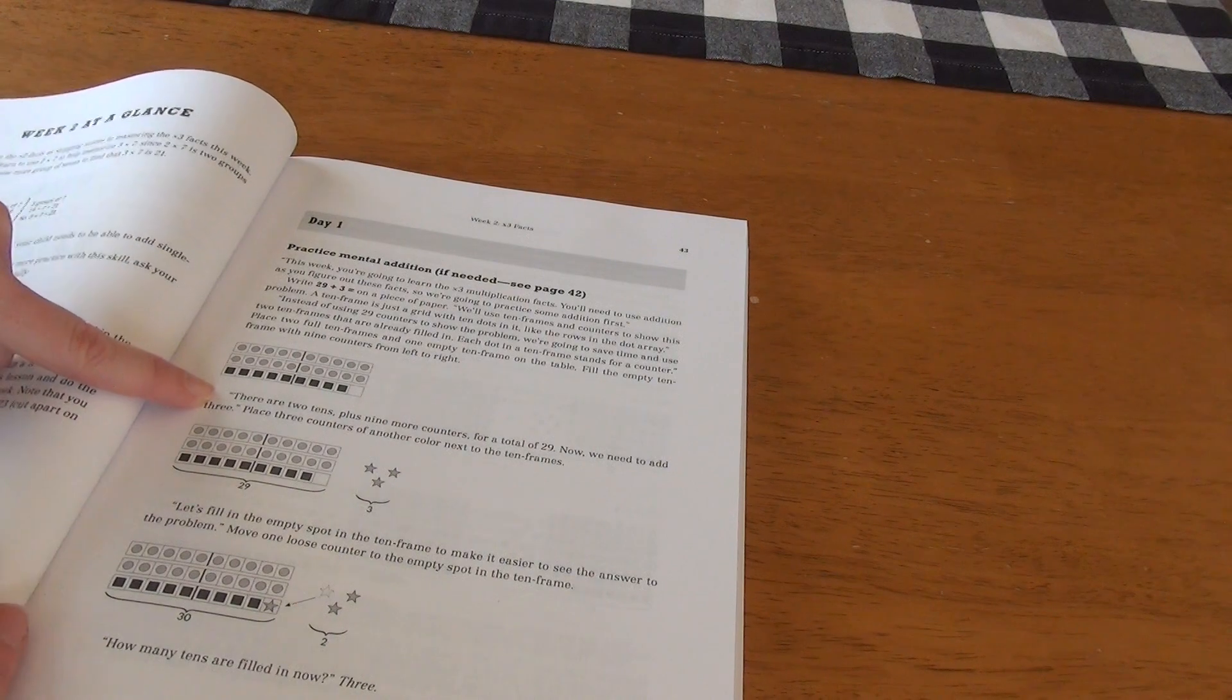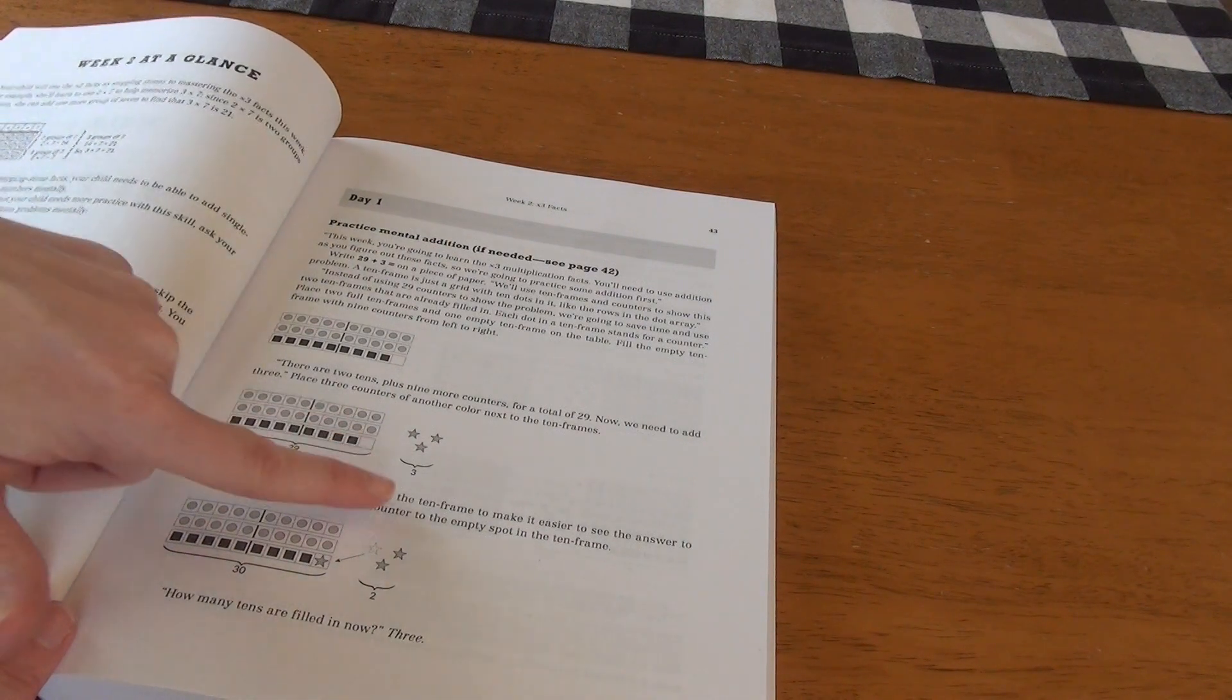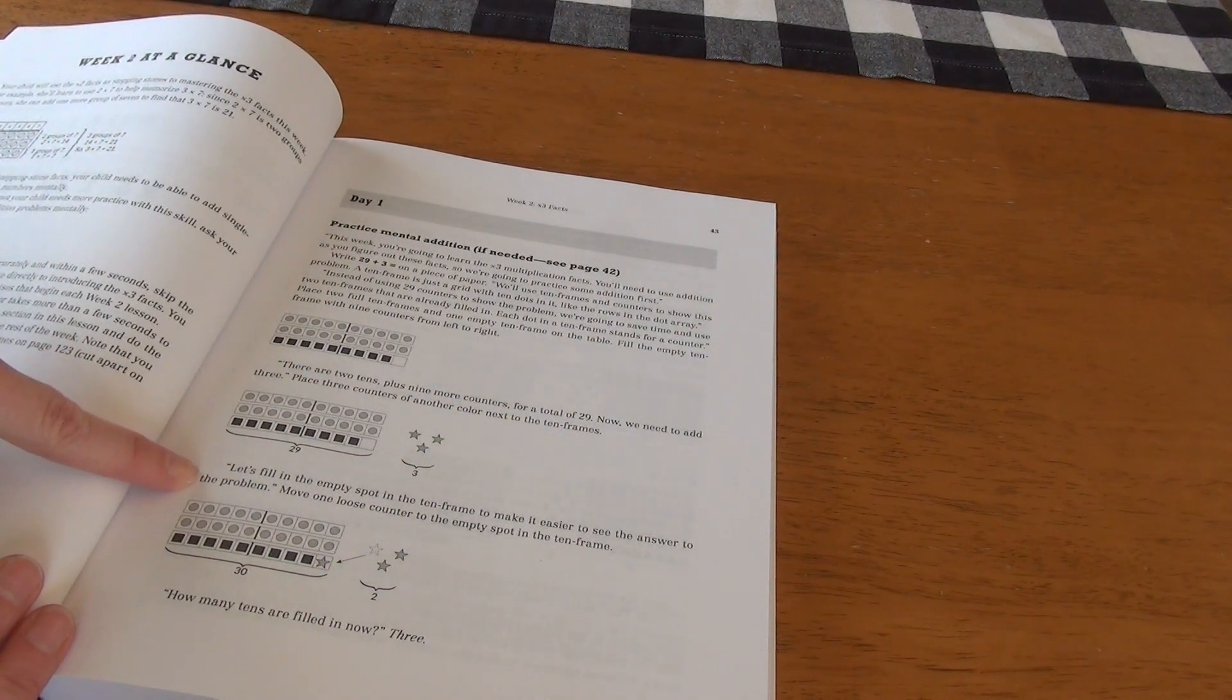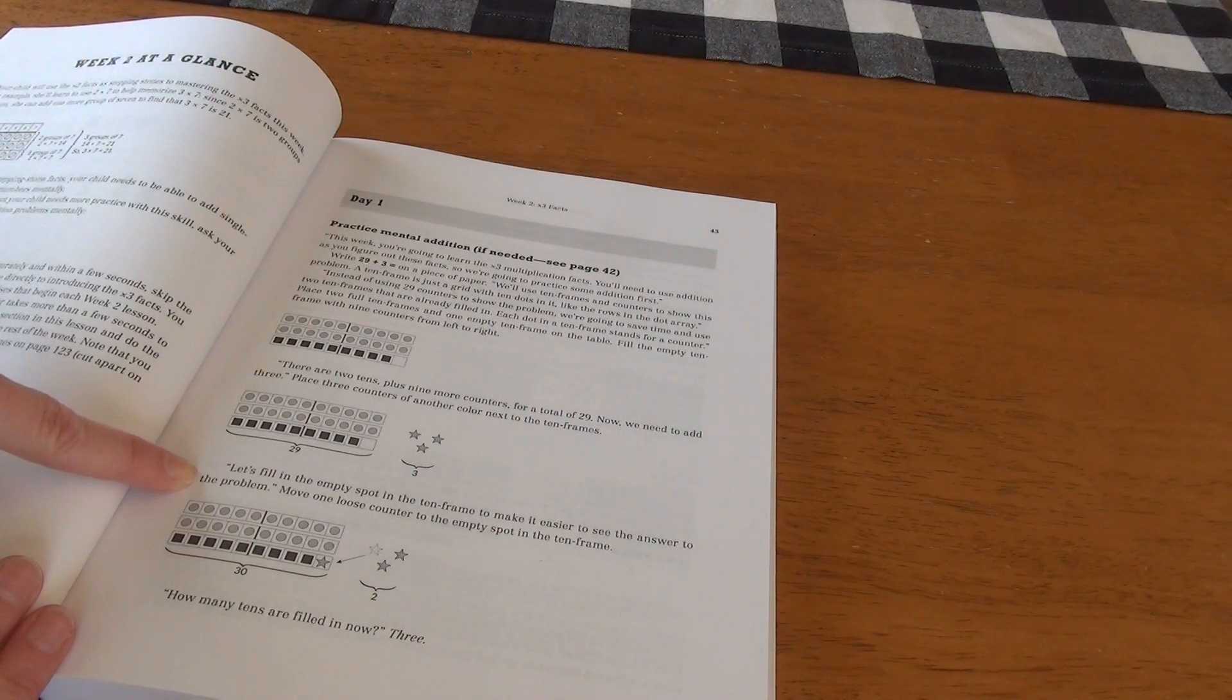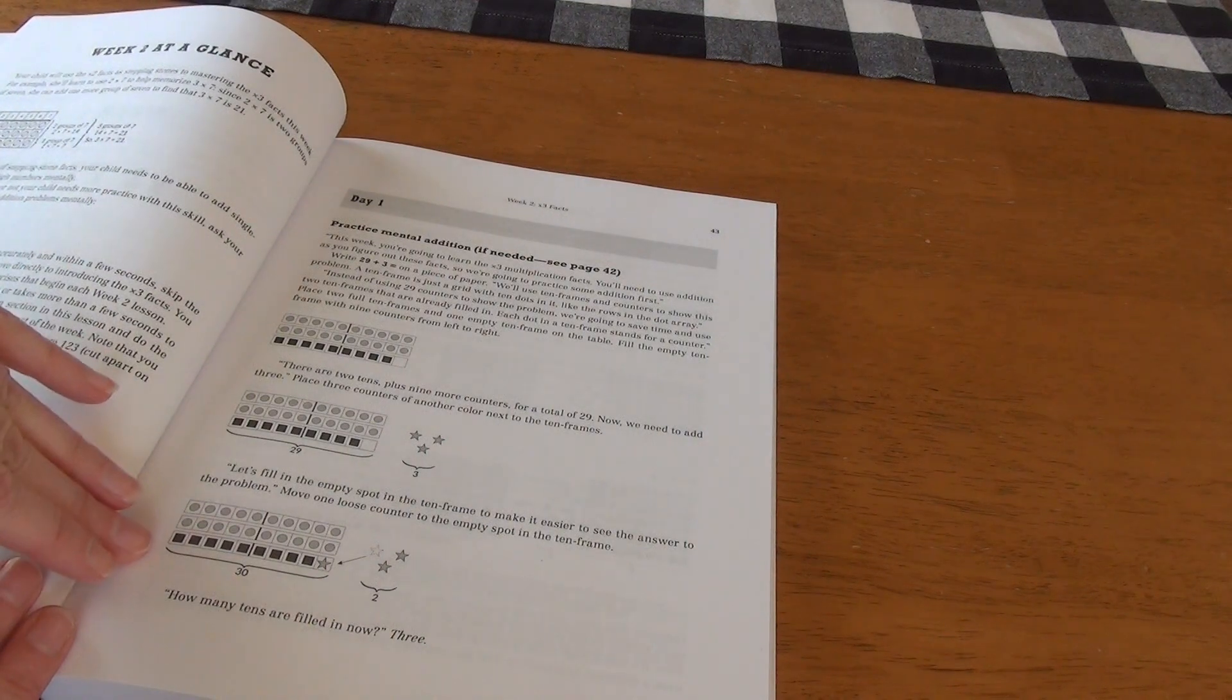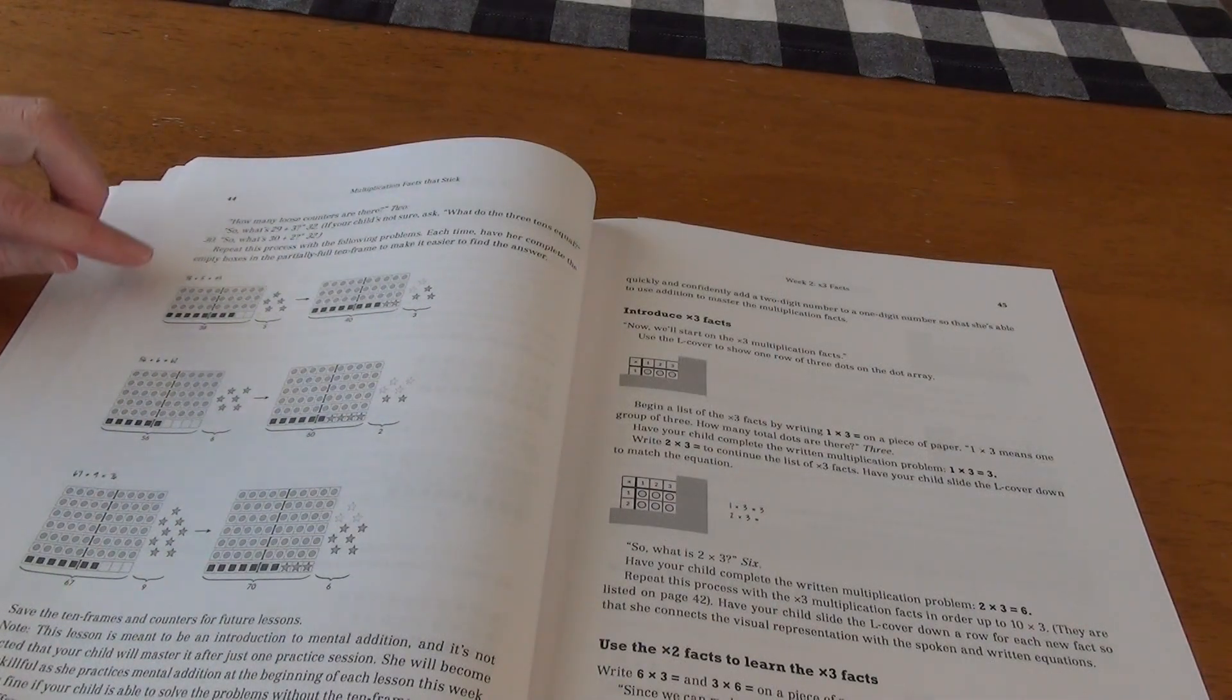Again, we go to the scripted section. There are two 10s plus nine more counters for a total of 29. Now we need to add three. And then it says, place three counters of another color next to the 10 frame. Scripted again. Let's fill in the empty spot in the 10 frame to make it easier to see the answer to the problem. Then it tells you to move one loose counter to the empty spot in the 10 frame. How many 10s are filled in now? And then the child is in italic where they should answer three.